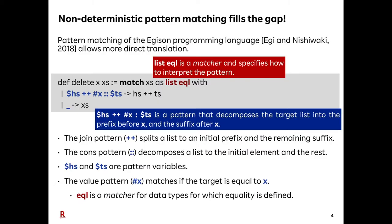This gap can be filled by the pattern-match facility that we proposed in 2018. This pattern-match facility supports user-extensible non-linear pattern matching with backtracking, and is implemented in our programming language EGISON.